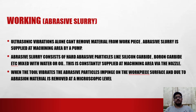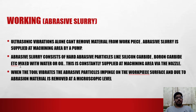Now we'll see the working of abrasive slurry. The vibrations from the horn alone cannot remove material from the workpiece. The abrasive slurry is supplied at the machining area by a pump. This slurry consists of abrasive particles like silicon carbide, boron carbide, or even diamond, mixed with water or oil. This is supplied constantly at the machining area by the nozzle. When the tool vibrates, the particles impinge on the workpiece surface, and due to abrasion, material is removed at the microscopic level.